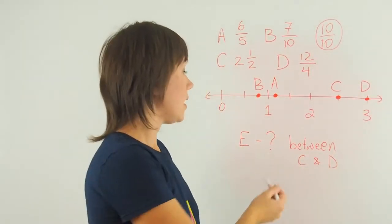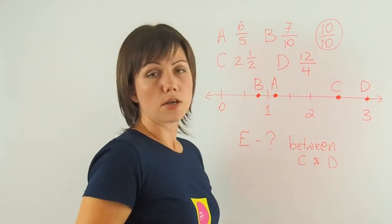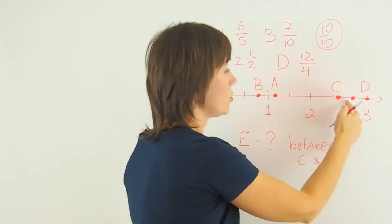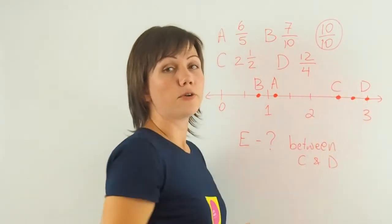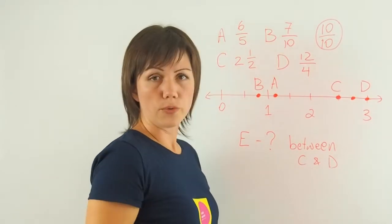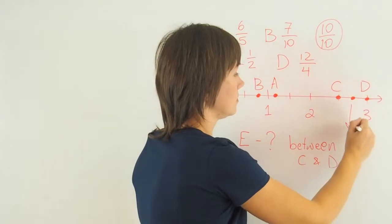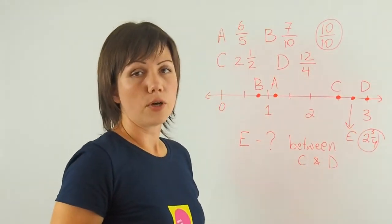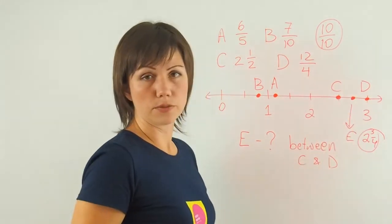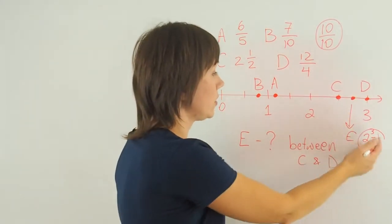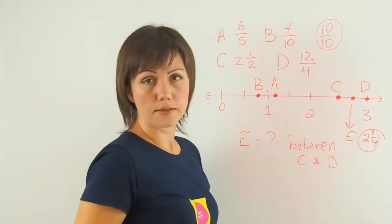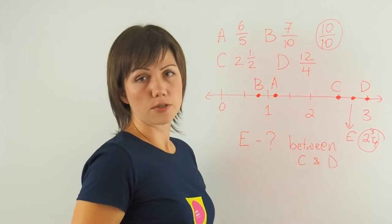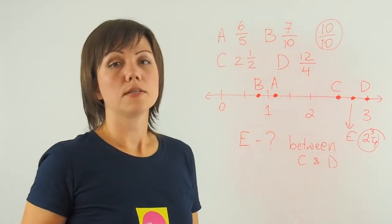So I know that point E is located between C and D. So I can choose any value that's located here between C and D, between 2 and 1 half and 3. For example, I can choose 2 and 3 quarters. 3 quarters means that I went 1 half and 1 third more. So 2 and 3 quarters is more than 2 and 1 half, but it's less than 3. You can pick any other value between C and D. This is just a convenient value that is commonly used. Now let's move on to our second question.